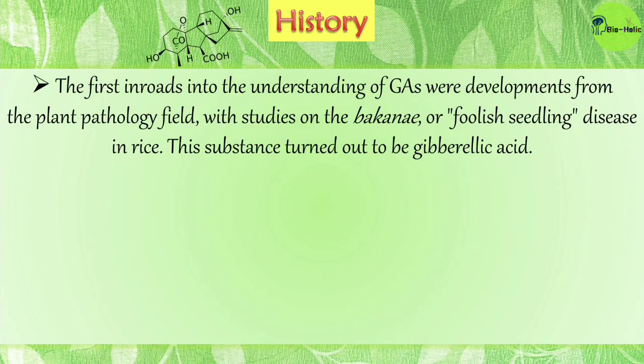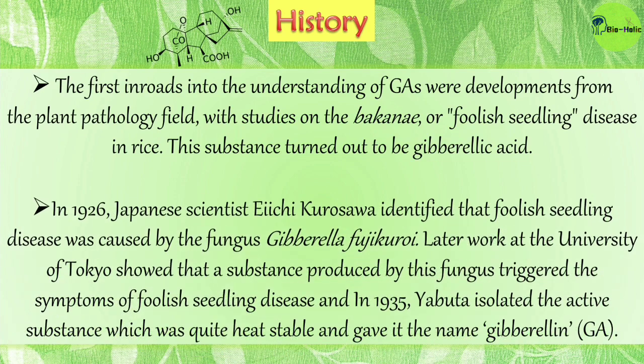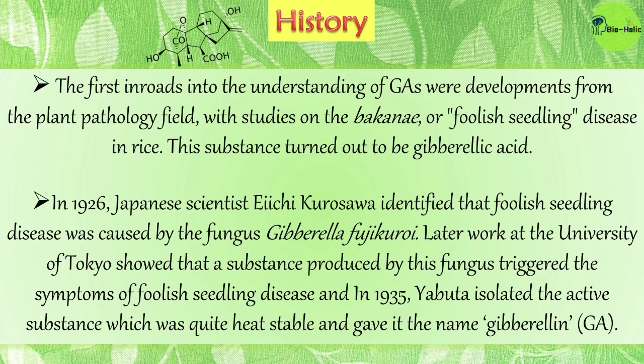Now let's have a look at the historical background of gibberellins. The first inroads into understanding gibberellins came from the plant pathology field, with studies on the bakanae or foolish seedling disease in rice. This substance turned out to be gibberellic acid. In 1926, Japanese scientist Eiichi Kurosawa identified that foolish seedling disease was caused by the fungus Gibberella fujikuroi.